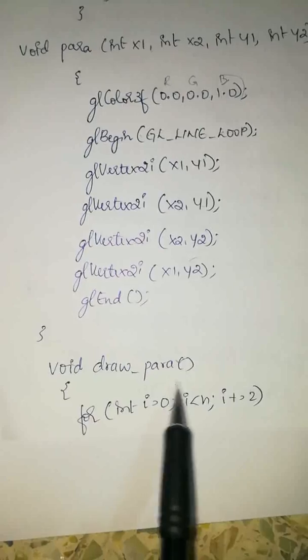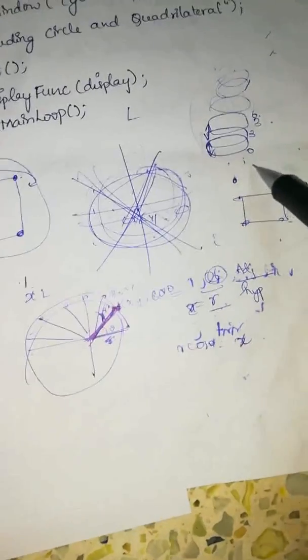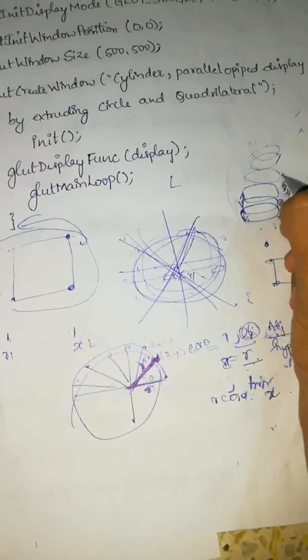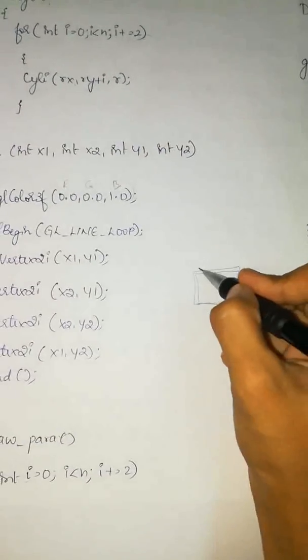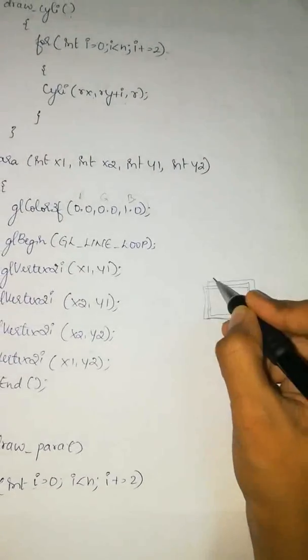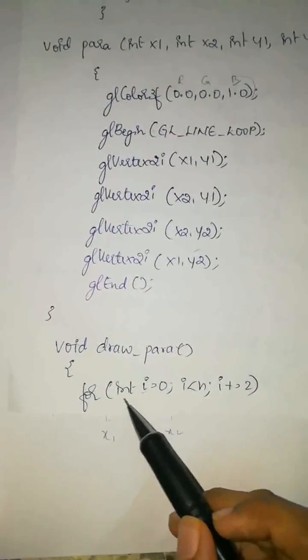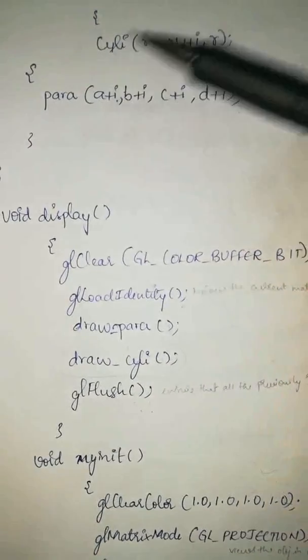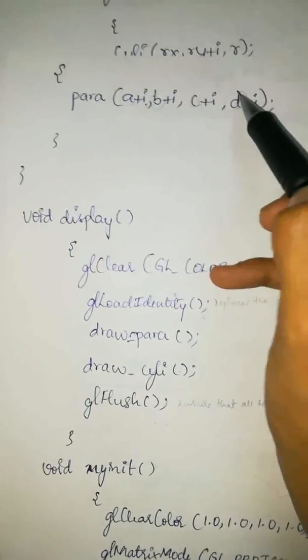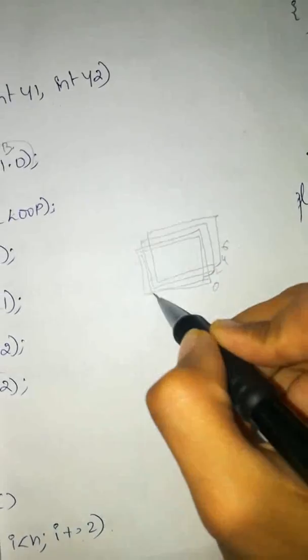Void draw_para draws the parallelepiped. Just as with the cylinder, where circles were drawn at iterations of 0, 2, 4, 6, 8, 10, the same approach is used for the parallelepiped. The for loop is: for(int i = 0; i < n; i += 2). The new vertices at each step are a+i, b+i, c+i and d+i — these form the vertices of the next rectangle after the first, building up the parallelepiped iteratively.